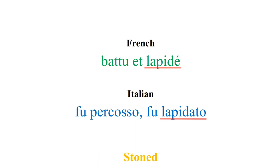That doesn't quite make sense, but that's how I think of it — to try to make sense and draw a link between the English 'dilapidated' and these words that I'm looking at right now. Putting all that together, it becomes very easy for me to register these words in my mind: 'lapide' and 'lapidato' mean 'stoned,' while 'dilapidated' means a house or building that is in a state of ruin.